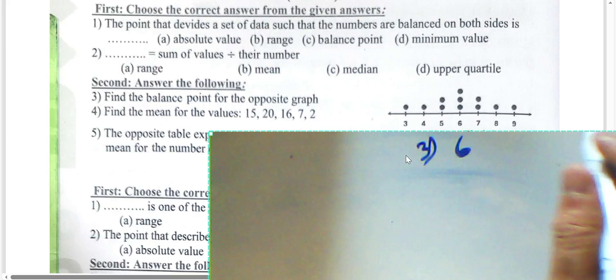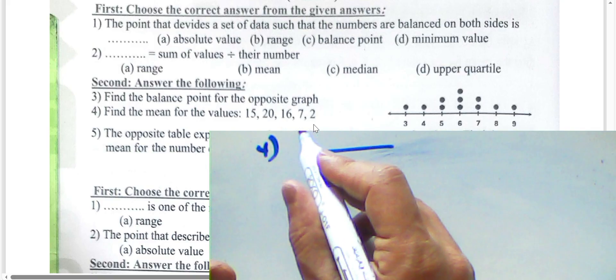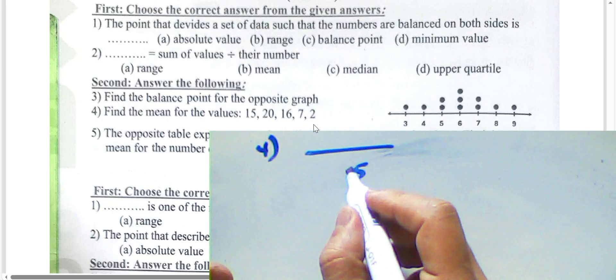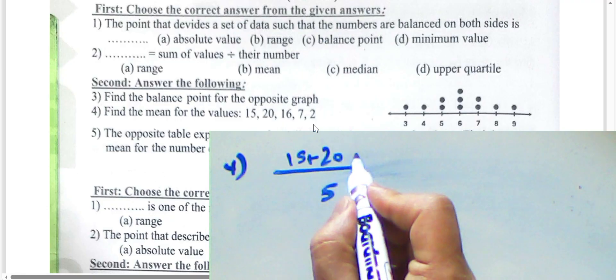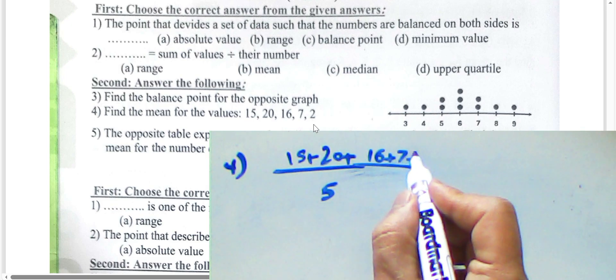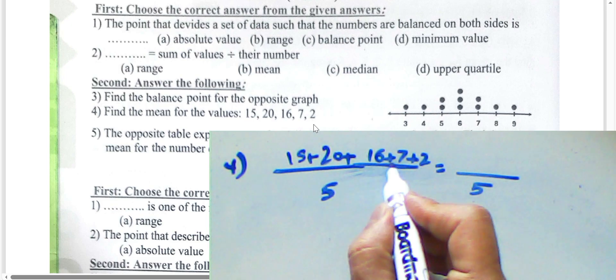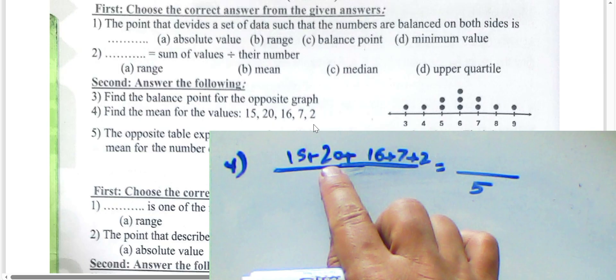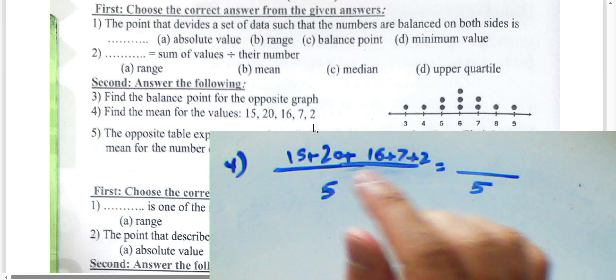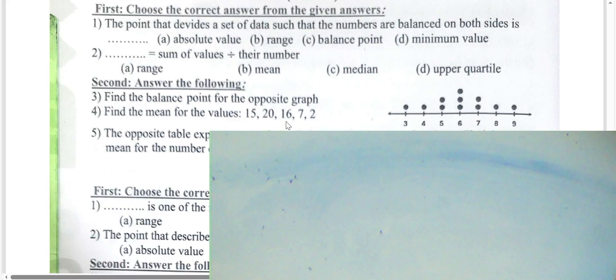Question three: the balance point value is six. Question four: find the mean of the values 15, 20, 16, 7, and 8. Count the digits — there are five. Add them: two plus seven is nine, nine plus fifteen is twenty-five, twenty-five plus twenty is forty-five, forty-five plus fifteen is sixty. Sixty divided by five equals twelve. The mean is twelve.